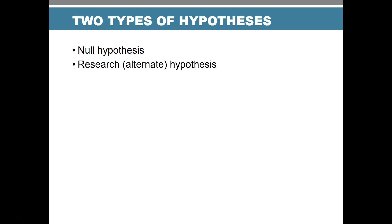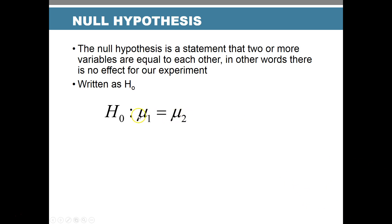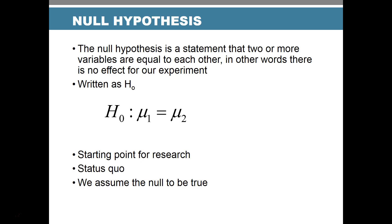We have two types of hypotheses: the null hypothesis and the research — also called the alternate — hypothesis. The null hypothesis states that two things are equal; in other words, there's no effect. It's the status quo. We write this as H-sub-zero. If we have two groups, the null says the mean of group one equals the mean of group two. This is our starting point — we assume no difference, and we're trying to prove that wrong. I remember it because 'null' means nothing — no effect.